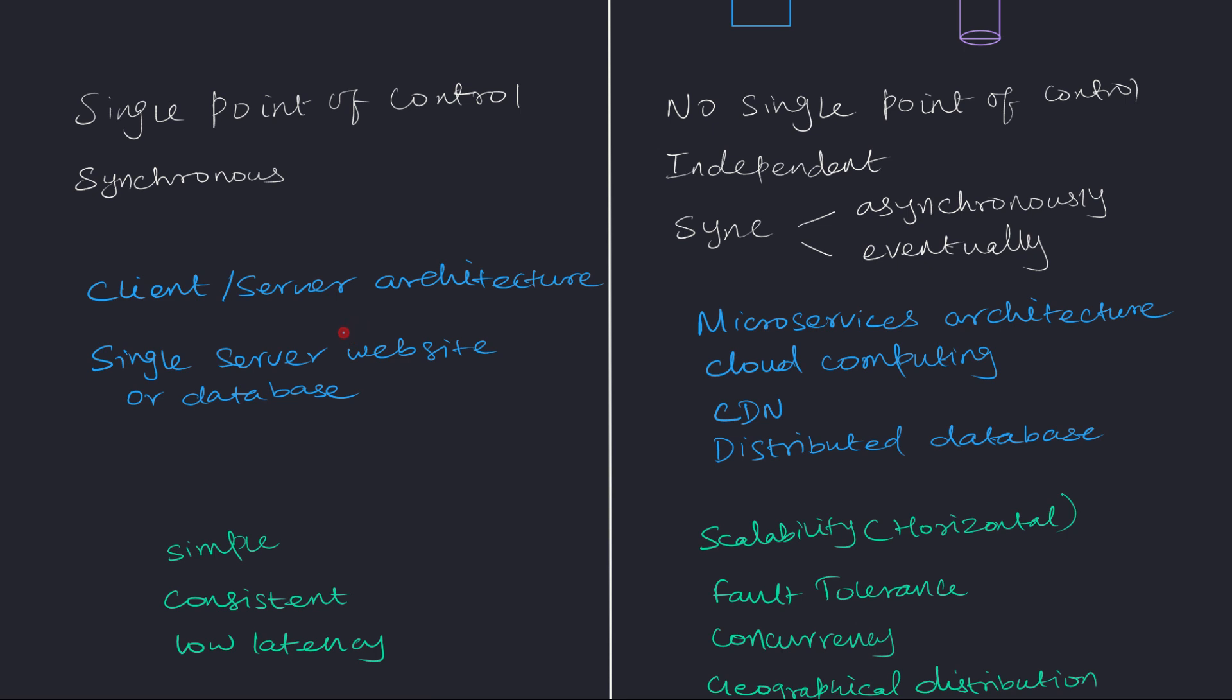Now coming back to the centralized system, these are some of the examples for centralized systems. If you have any sort of client server architecture then we are talking about centralized system. So for example you might have a website which will be your client and you will also have web server backend so that will be your server. So this will be client server architecture and that will be part of centralized system. And similarly if you have single database then we could call that as a centralized system.